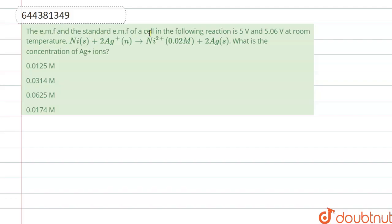The emf and the standard emf of a cell in the following reaction is 5 volt and 5.06 volt at room temperature. The reaction is Ni combined with 2Ag+ to form Ni2+ whose concentration is 0.02 M and 2Ag. What is the concentration of Ag+ in this reaction?